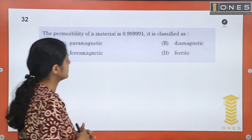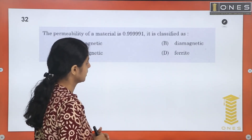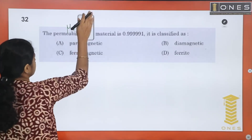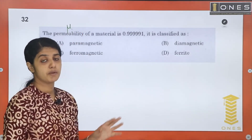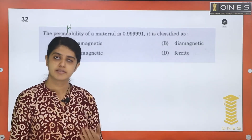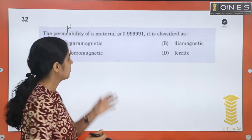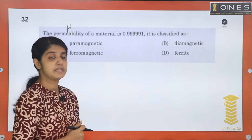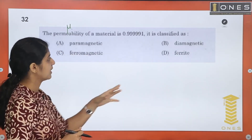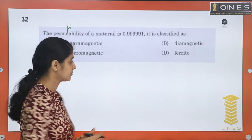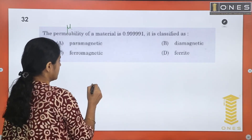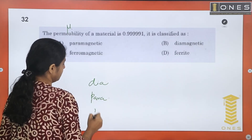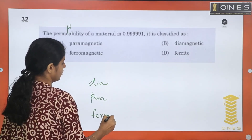Next question: The permeability of a material is 0.9991 — it is classified as what? Permeability is represented as mu (μ), which is the magnetic property of a material. The types of magnetic materials include diamagnetic, paramagnetic, ferromagnetic, and ferrite. We will classify based on the value of mu.